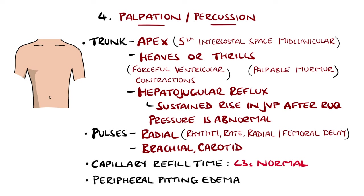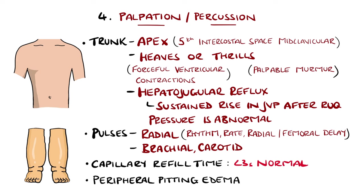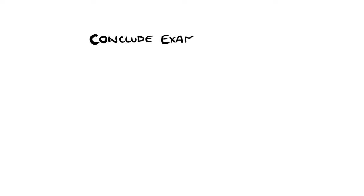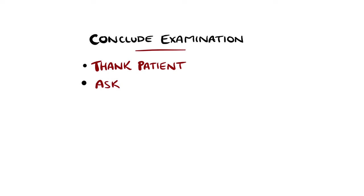To assess for peripheral oedema, pressure is applied for 10 seconds, typically at the anterior tibia, before feeling for an indentation left behind, indicating pitting peripheral oedema. Similar findings are tested at the hips and sacrum, especially in patients that are bedbound. Bear in mind, although this is a systematic approach, often different parts of the exam will be done simultaneously. To complete the examination, thank the patient and ask them to dress, wash your hands again and summarise your findings.